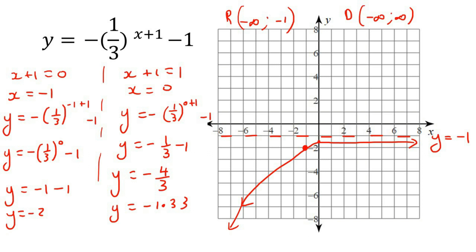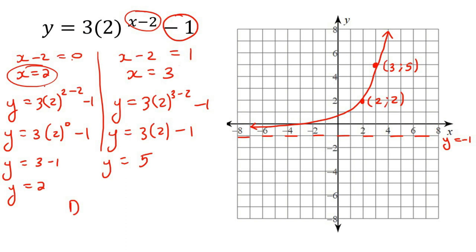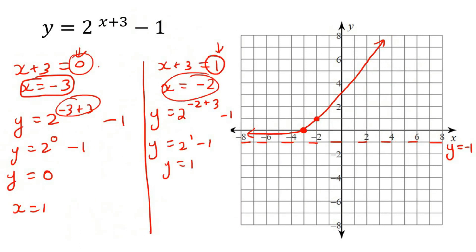Let's go back and do the domain and range of the two previous examples. For the second-to-last one: domain is negative infinity to positive infinity; range is negative 1 to infinity. For the one before that: domain is negative infinity to positive infinity, and the range is negative 1 to positive infinity. And that's it — thanks for watching.